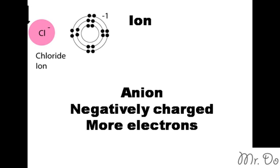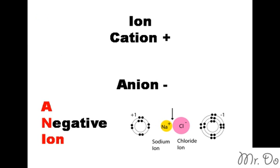An easy method to remember which one is positive and which one is negatively charged - cation is positively charged and anion is negatively charged - is that the word anion, you can get it's a negative ion. So that's how you remember anion is a negative ion.